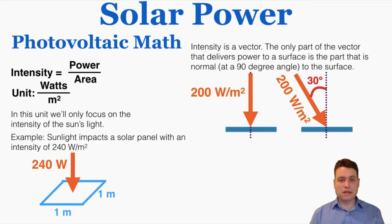This is actually a pretty common intensity of the sun at the surface of the earth, and intensity is actually a vector. The only part of the vector that delivers power to a surface is the part that is normal at a 90 degree angle to the surface.